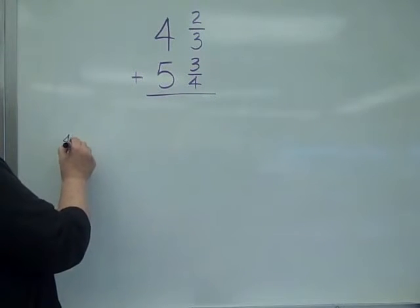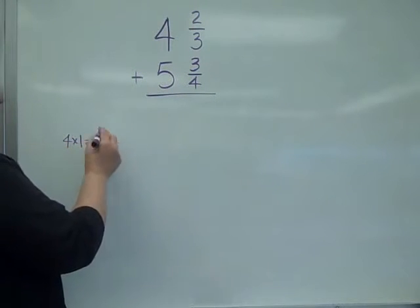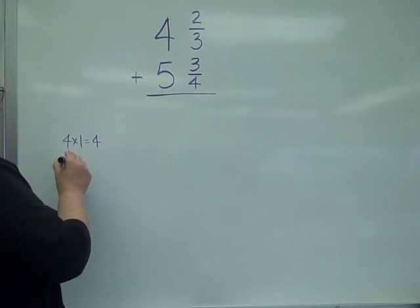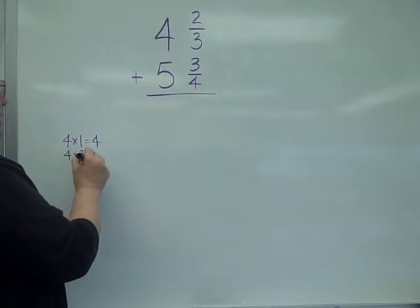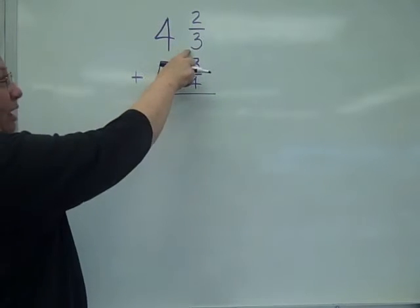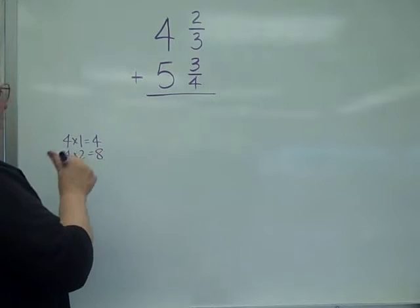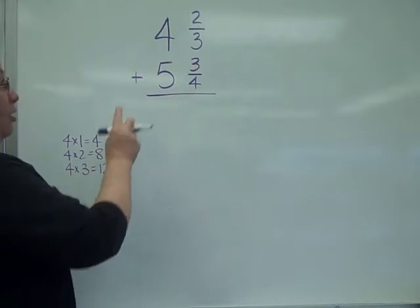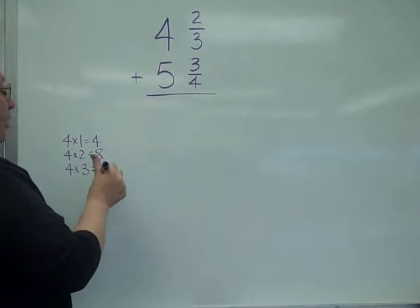4 times 1 is 4, but 3 does not go into 4, so I'm going to keep going. 4 times 2 is 8, but 3 doesn't go into 8. Keep going, 4 times 3. There's my 12, and I know that 3 goes into 12.